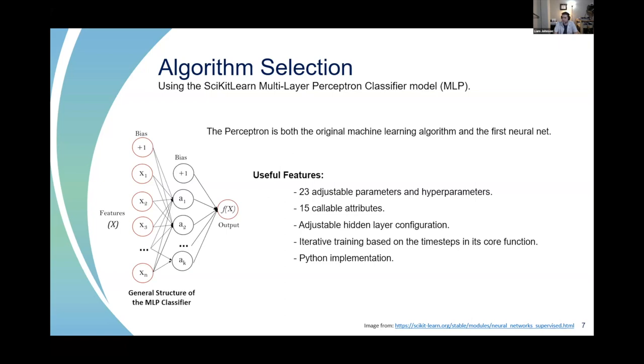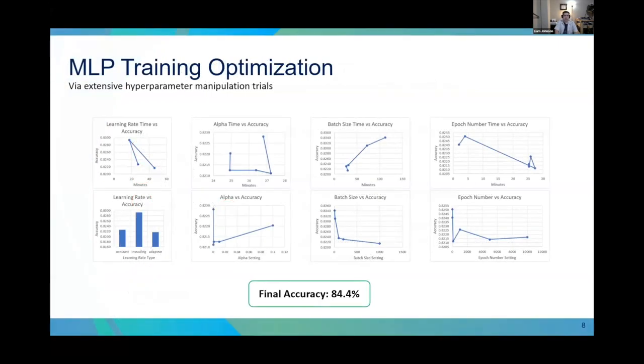I selected an algorithm, using the scikit-learn multi-layer perceptron. It's very straightforward to use with a large number of adjustable hyperparameters and the actual configuration of layers is very easy to adjust. The perceptron is the original machine learning algorithm and the first neural net. I did extensive hyperparameter optimization trials and was able to get about 84.4% accuracy repeatedly, which is acceptable considering a null model would be only 3% with this number of categories.